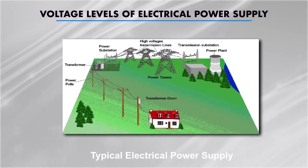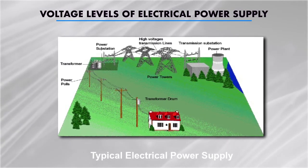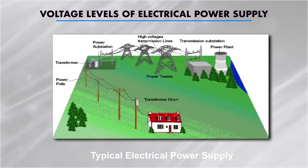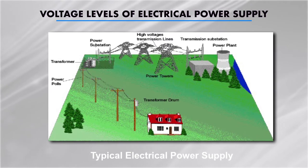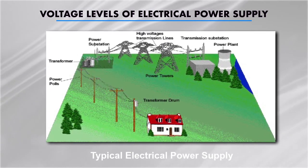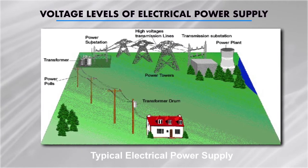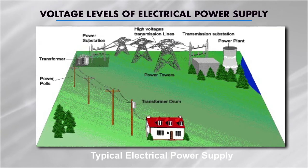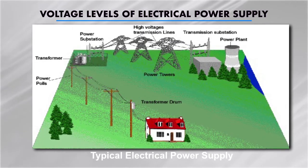Here I am showing a typical electrical power supply system where you can see how power is generated at the plant and then transmitted up to the consumer end through various stages. The electrical power supply comprises generating units that produce electricity, high voltage transmission lines that transport electricity over long distances, and low voltage distribution lines that deliver electricity to consumers. Substations are part of this system where voltage is transformed to lower levels for distributing power to end users. Power is transmitted at very high voltages because it reduces losses.